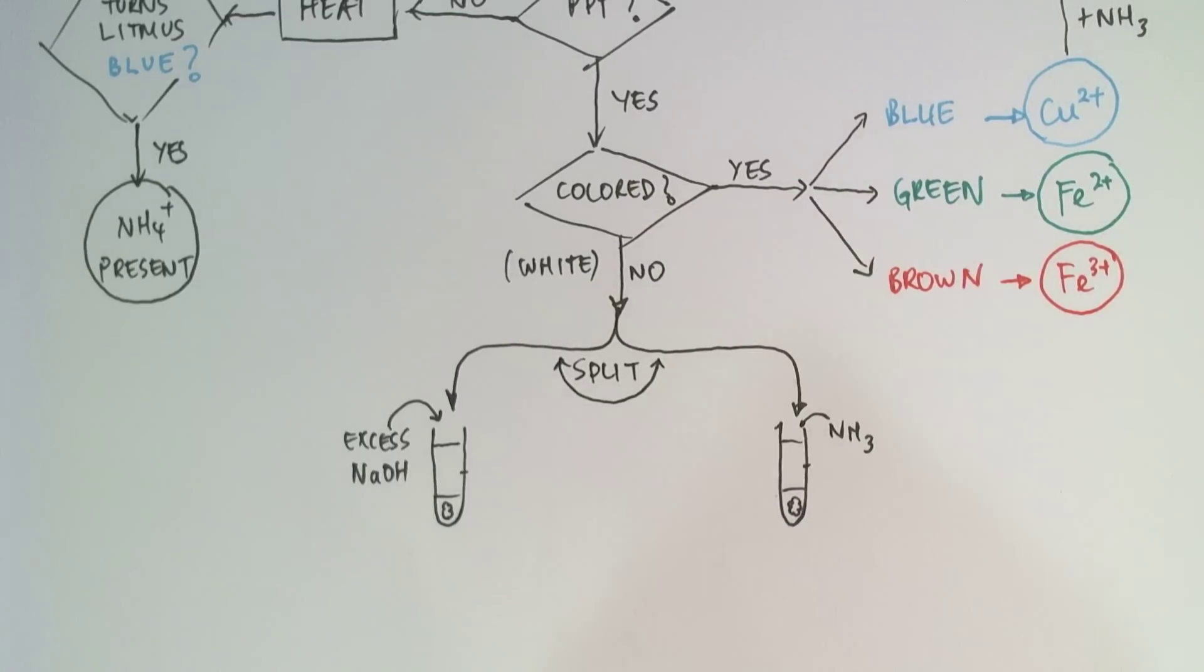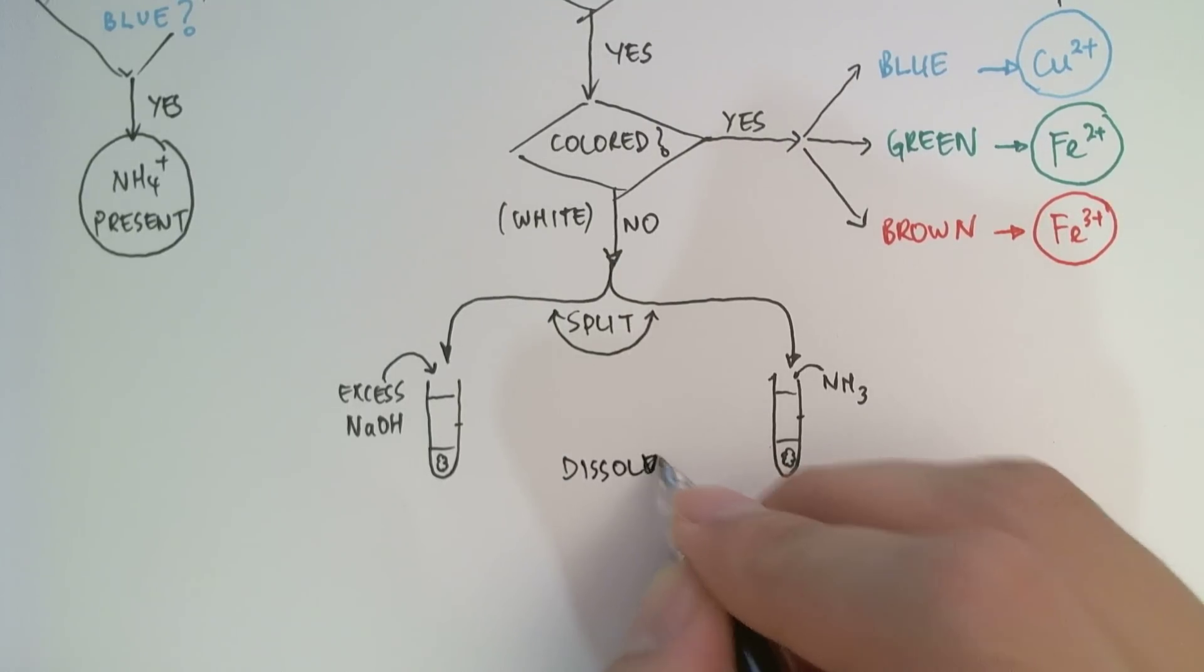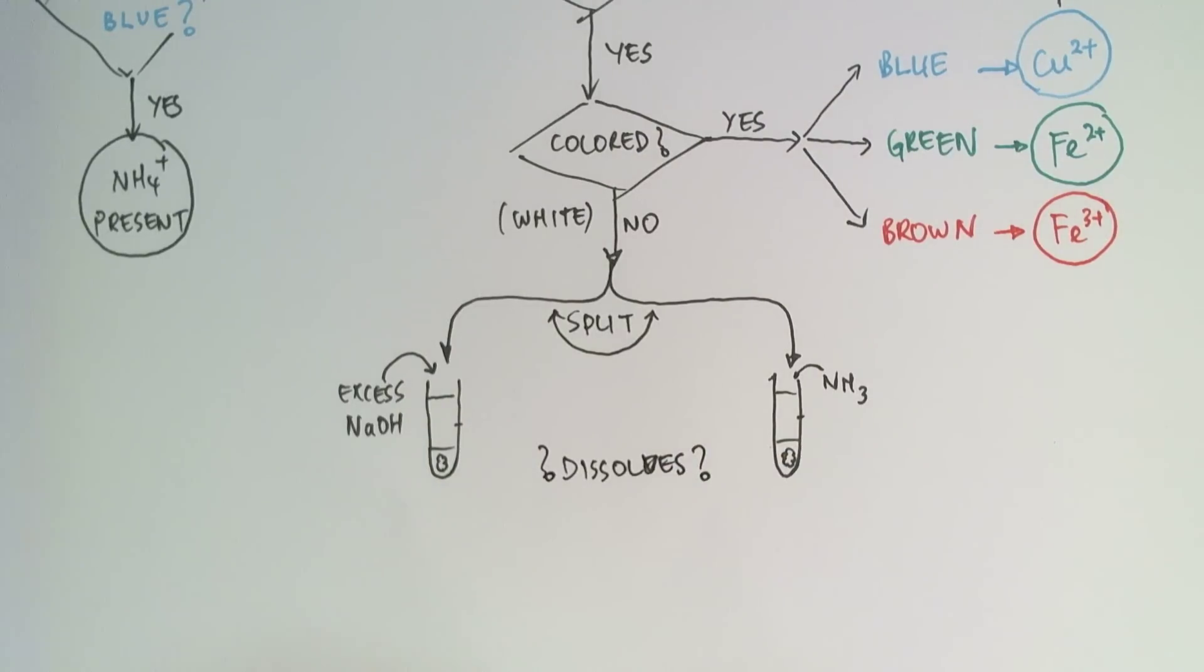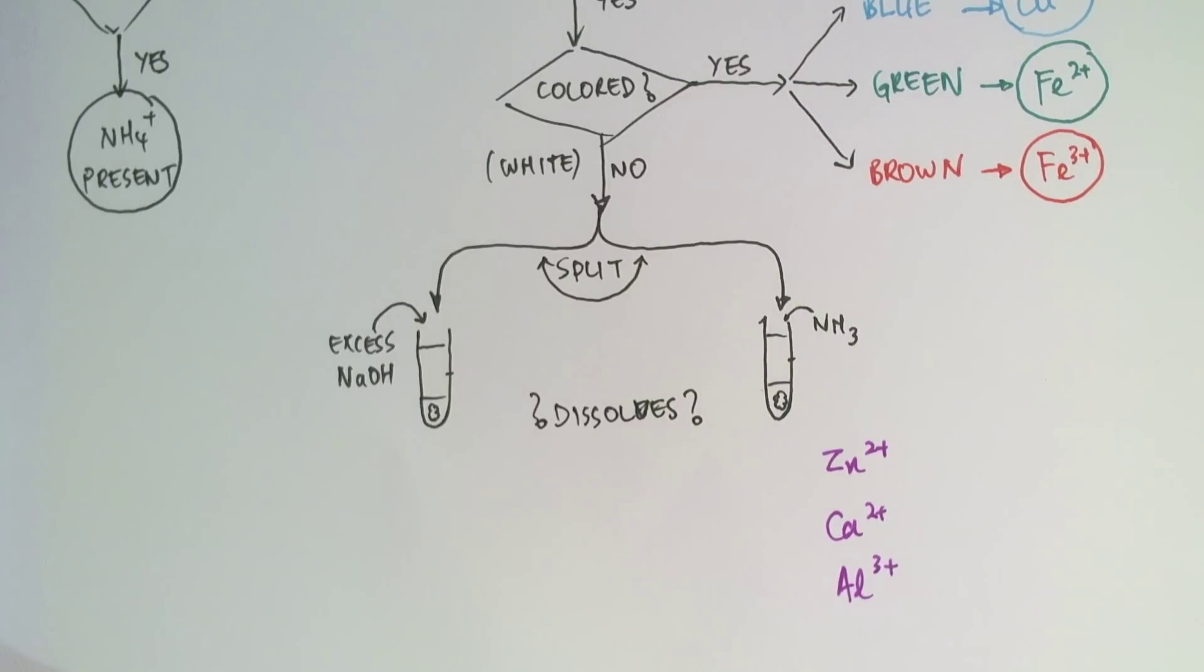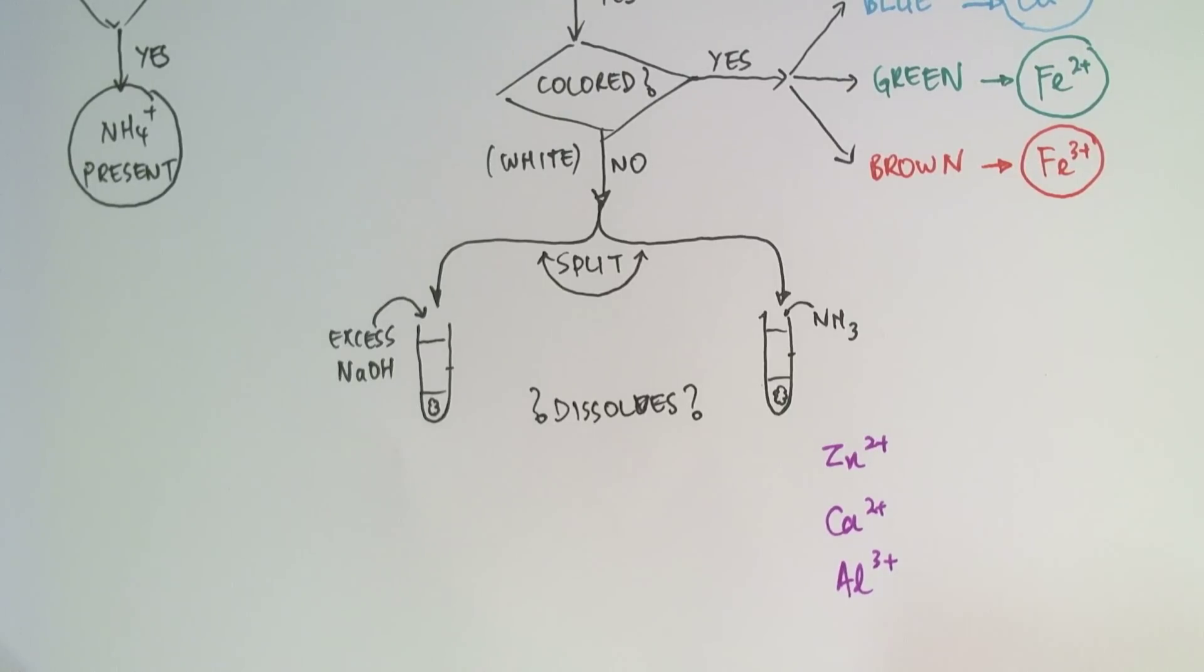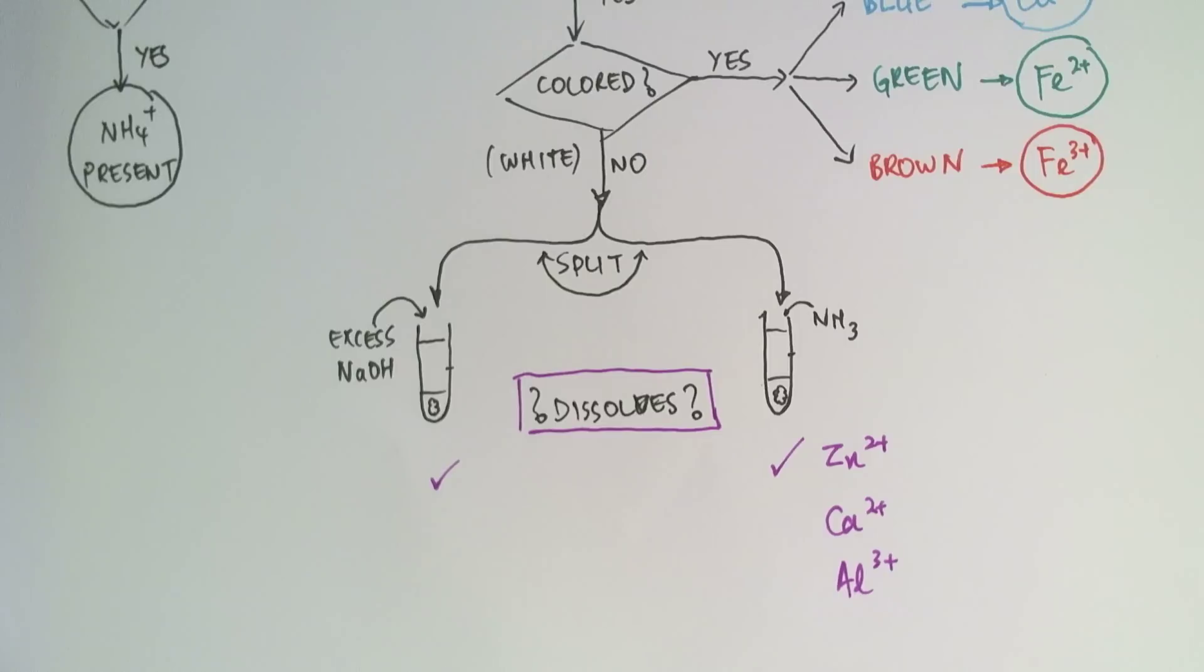And then we make a determination based on whether or not the resulting white precipitate dissolves in either of these or both or neither of these solutions. So what we had was the remaining three cations that we identified were zinc 2 plus, calcium 2 plus, and aluminum 3 plus. Well, it turns out, you can look at the previous video where we showed the equations that the zinc hydroxide complex will indeed dissolve in both the excess sodium hydroxide as well as the ammonia.